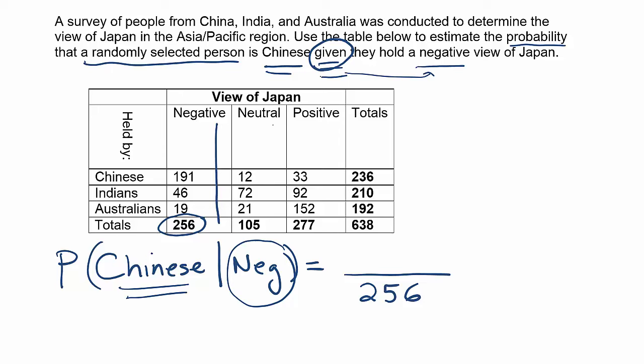It looks like 191 is associated with being Chinese — in other words, there were 191 people who were Chinese in this column. So that's the number we put in the numerator. And that's it; we're done after that. All we have to do is evaluate that fraction.